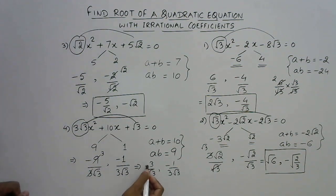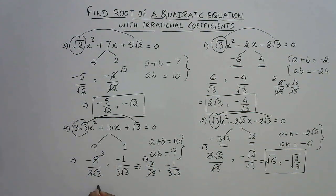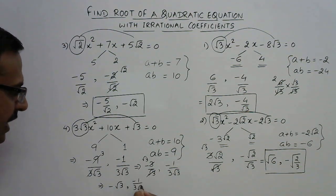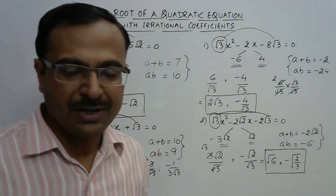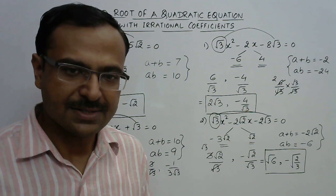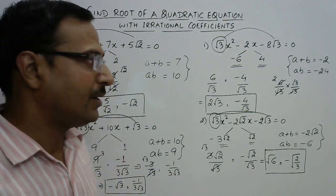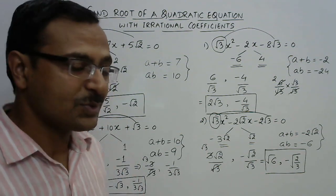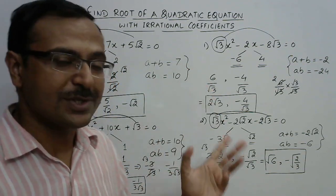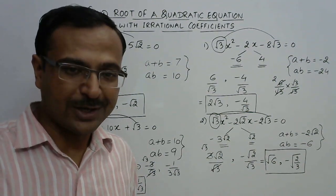Here 3 and √3 cancel to give √3 in the numerator, so the answers are -√3 and -1/(3√3). That's the answer for the final question. This video is beneficial for students in class 8 and above. Practice such questions so you can solve them within 5 to 7 seconds in competitions. If you like this video, share it with friends preparing for competitions and subscribe to the channel.